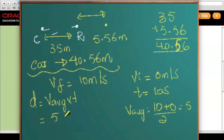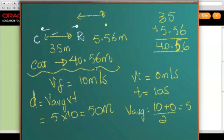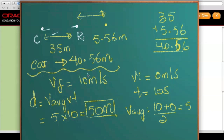The average velocity is 5 meters per second and the time is 10 seconds, so the distance moved by the cat is 50 meters. We just saw that if the cat had to catch the rat, it should have moved 40.56 meters from its original position — because the rat was already 35 meters apart and moved an additional 5.56 meters. But with our calculation, we can see that the cat moved a distance of 50 meters.